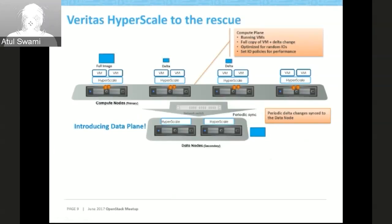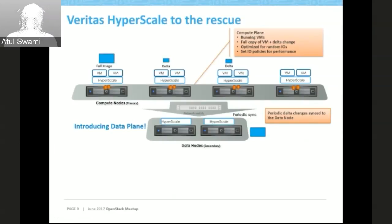In case of failure, the storage layer redirects to the data plane as a copy-on-demand. In parallel, a hydration process copies whatever data is not in the last 15 minutes from the data plane to the affected compute plane. We construct the full image on the reflecting node whenever there is a failure on the source node.